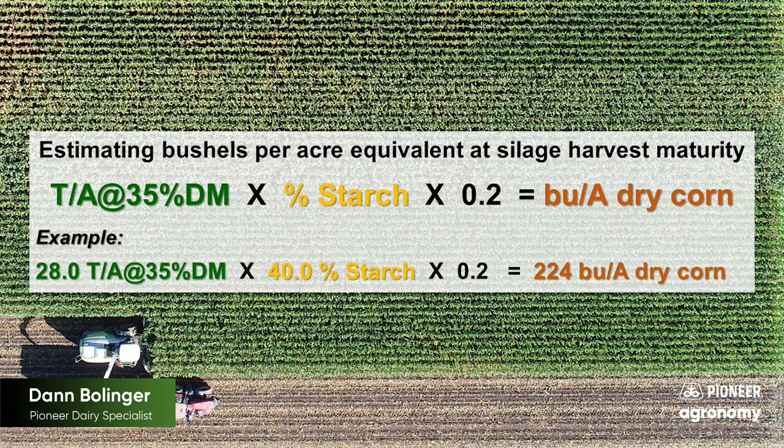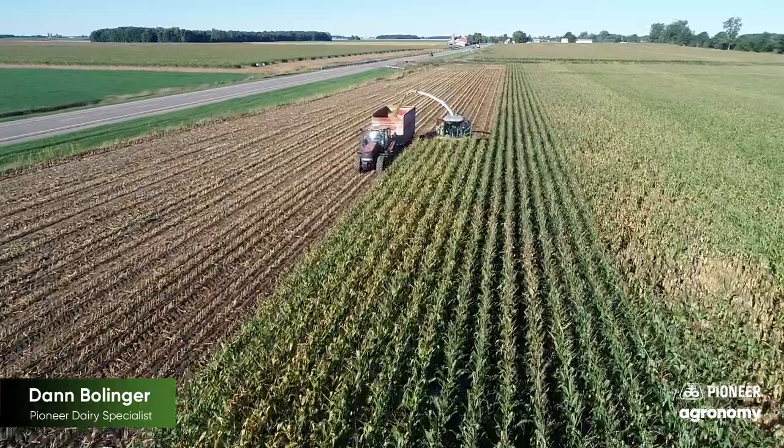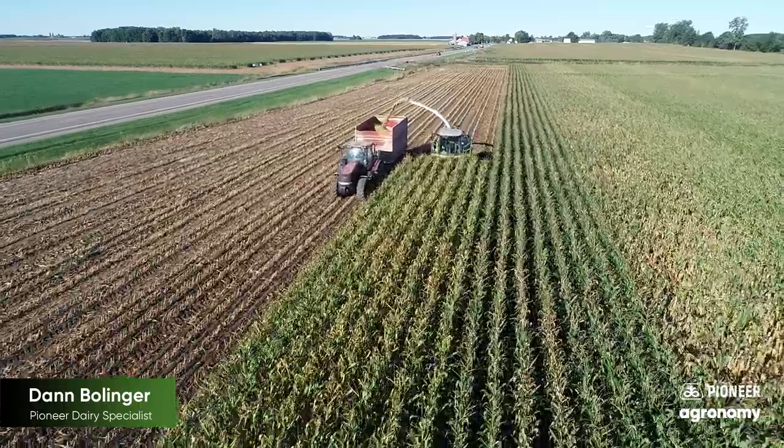If we end up with some outlandish numbers — such as 450 bushels per acre, which I've seen across many sample sets in the upper Midwest — those are red flags that maybe this data isn't any good. No data is better than bad data.